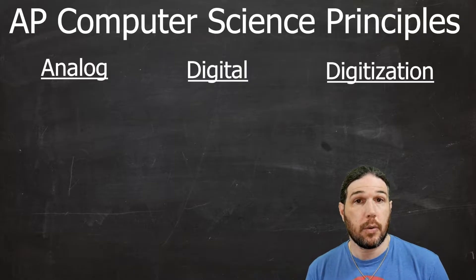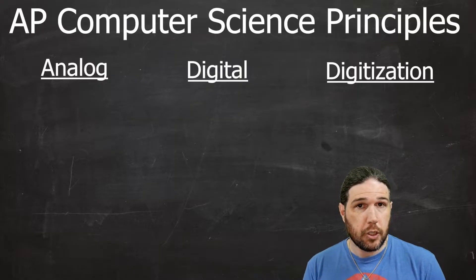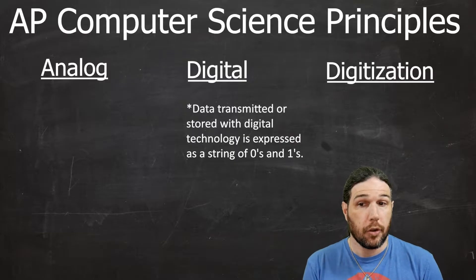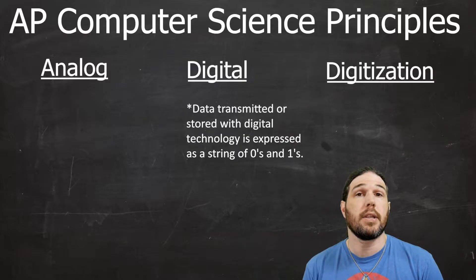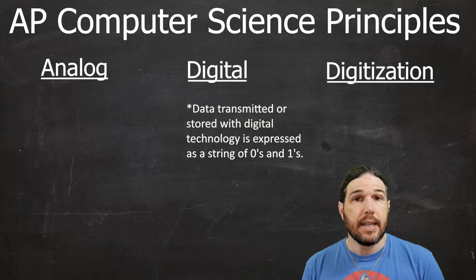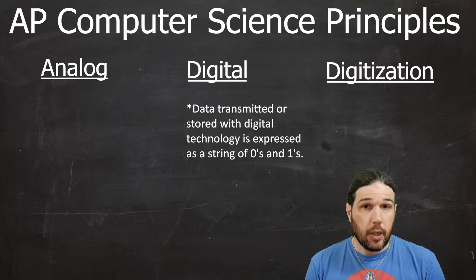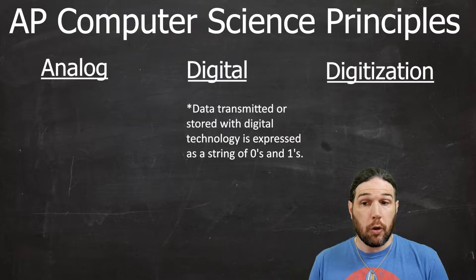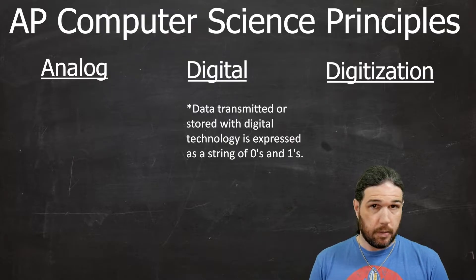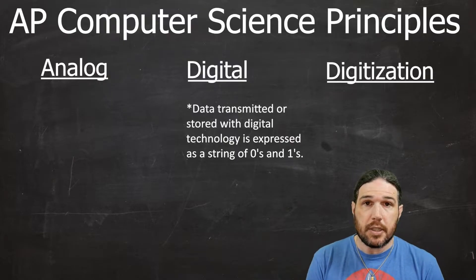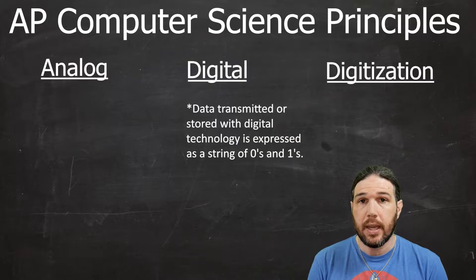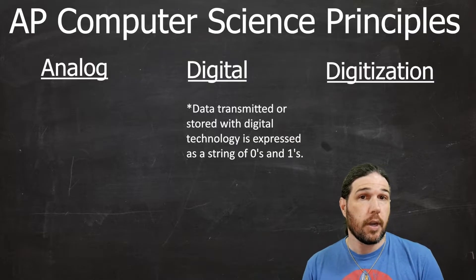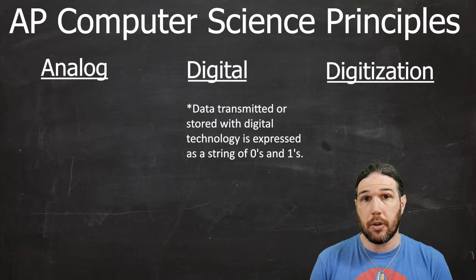Let's start with digital. Digital information, in essence, is anything that can be stored on a computer — in other words, anything that can be represented in binary. The video that you're watching right now is digital because before your computer translated it to the images that you're seeing and the sounds that you're hearing, it was just one long string of ones and zeros that I encoded from my computer right here.